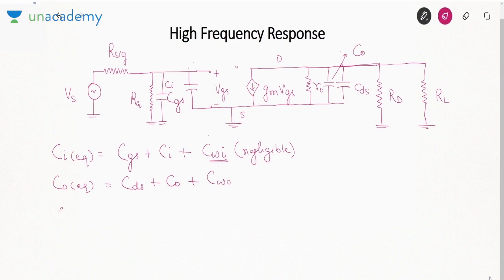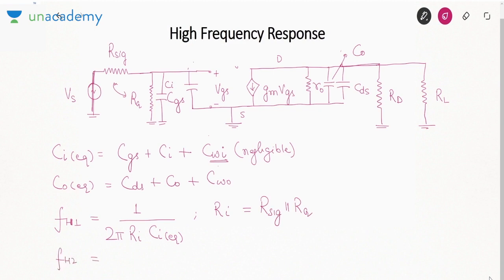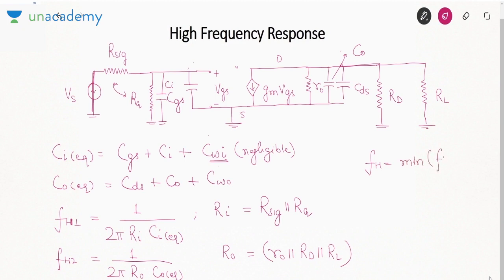We now find two cutoff frequencies. FH1 = 1 / (2π · Ri · Ci_equivalent), where Ri is the resistance across the input capacitance — with the voltage source short-circuited, R-signal and RG are in parallel, so Ri = R-signal ∥ RG. The other cutoff frequency FH2 = 1 / (2π · R0 · Co_equivalent), where the resistance across the output capacitance is R0 ∥ RD ∥ RL.